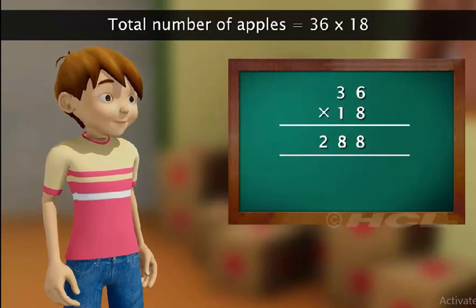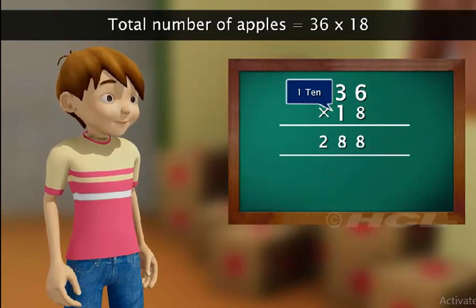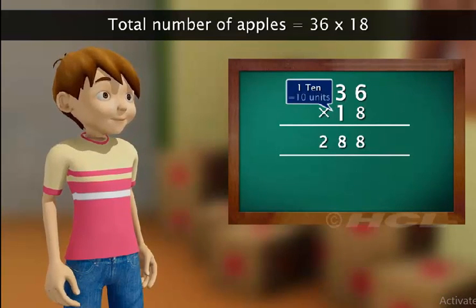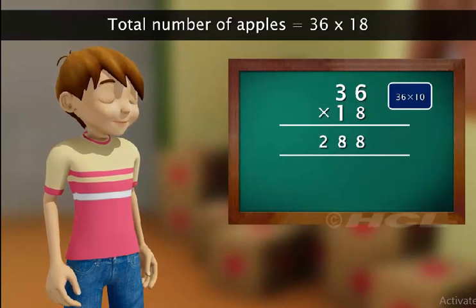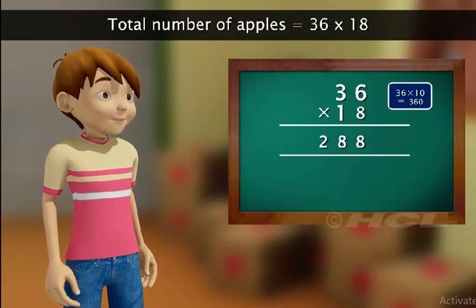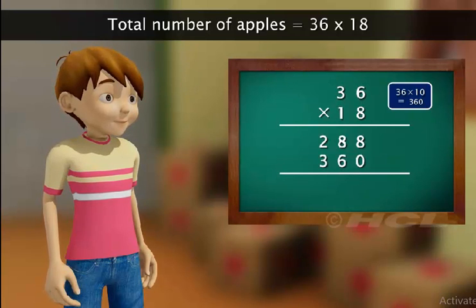Next, we have to multiply 36 by 1 at the 10th place. This means we have to multiply 36 by 10 and not by 1. Multiplying 36 by 10, we get 360 as the second product. We write this product below the first product as shown.